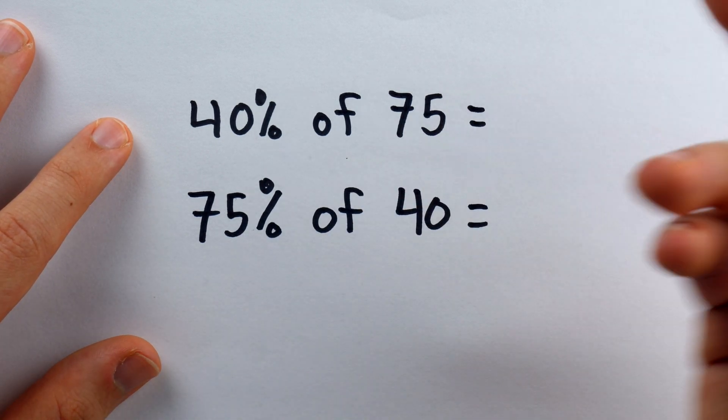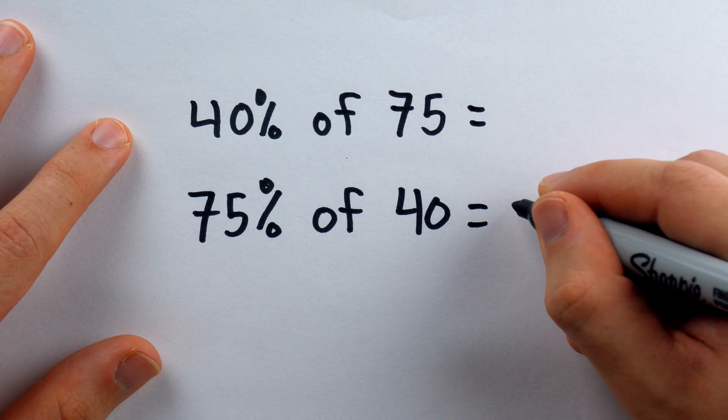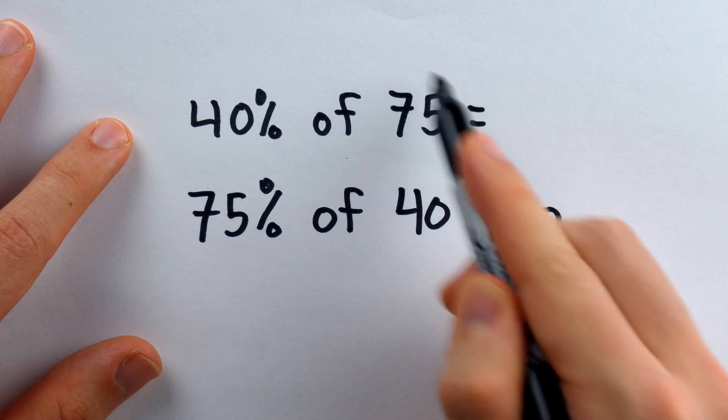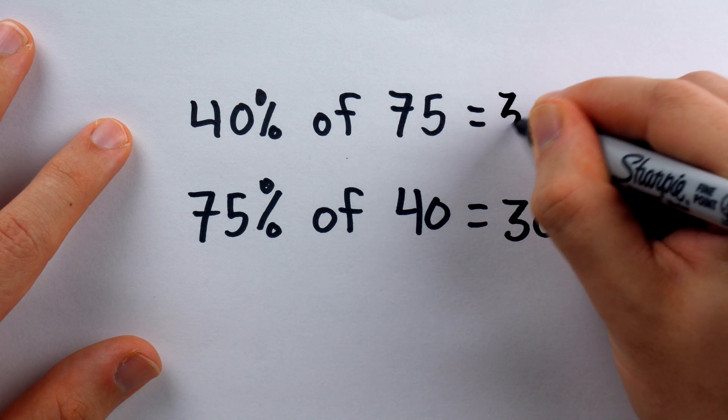Obviously, 75% of 40 is three-fourths of 40, which is 30. So that means this number, which we're saying is the same, is also 30.